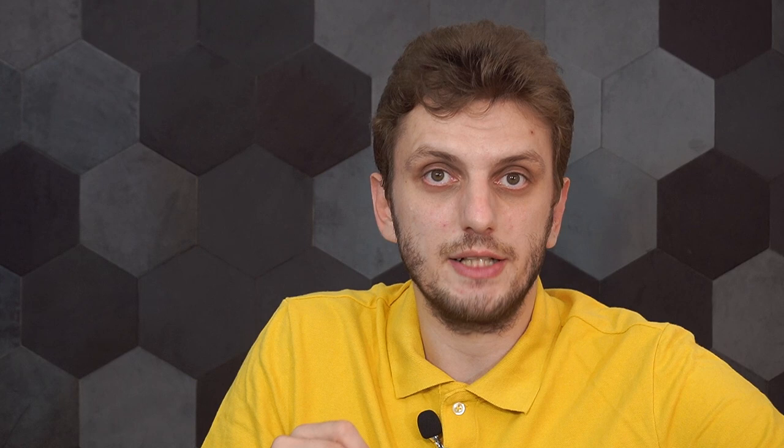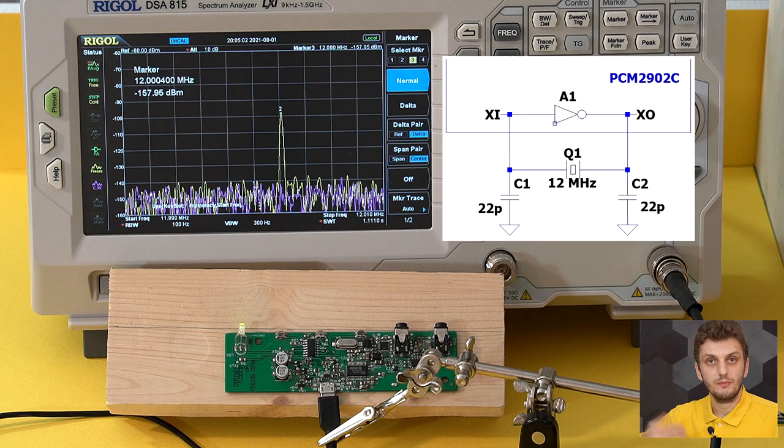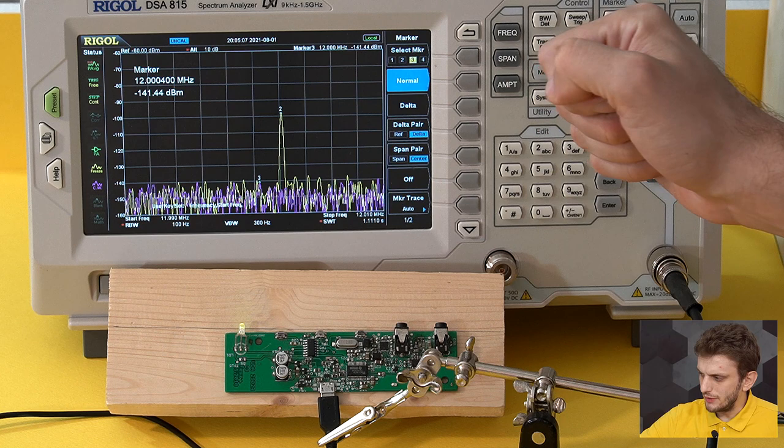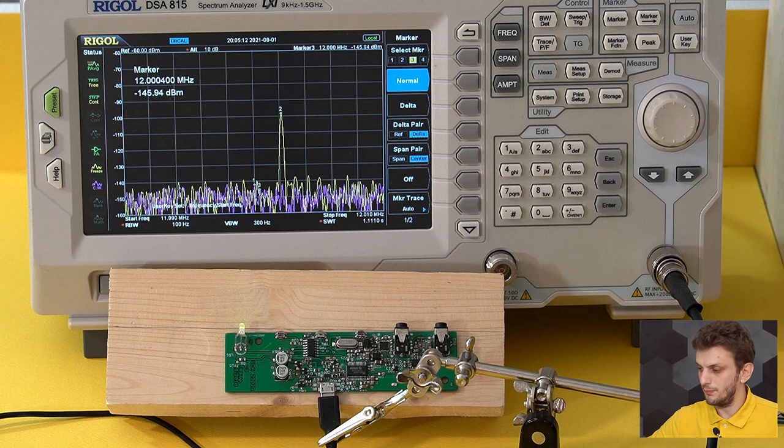So to correct this, let's increase the capacitors, starting off with double 22 picofarad capacitors. So now I swapped both capacitors out for 22 picofarad ones, and I managed to save the previous measurement so we can see exactly where our previous oscillation frequency was.